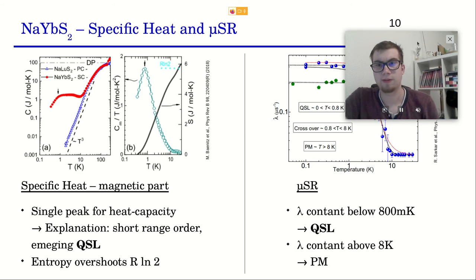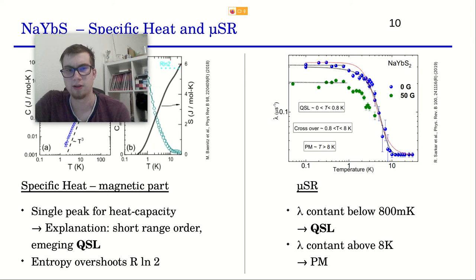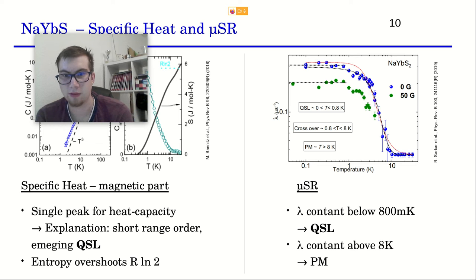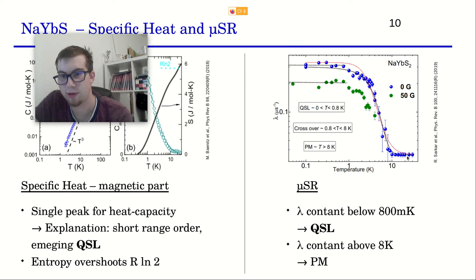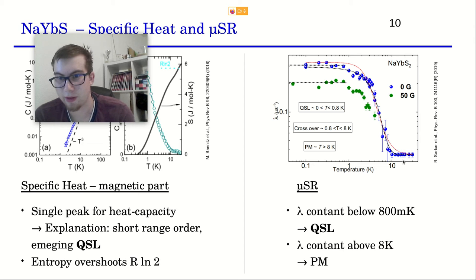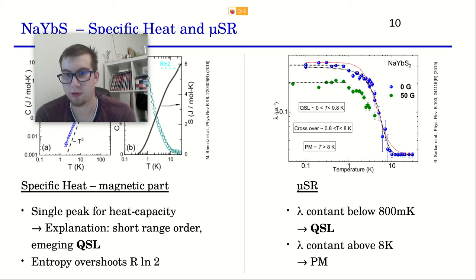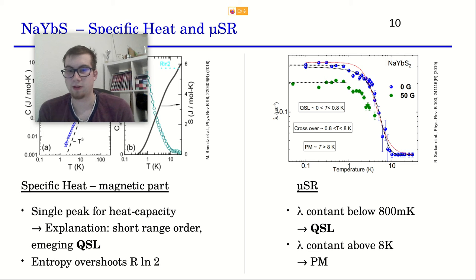I don't have deep expertise in muSR, but from this picture I understood that if we have a constant region we are not in a transition region. On the right part is paramagnetic and on the left part is quantum spin liquid. You can see something is constant here below about 1 K — suggesting a quantum spin liquid state — and something is constant above 10 K, suggesting a paramagnetic state. In between we have a broad transition region. If we had antiferromagnetic behavior we would expect a very sharp transition, but here we have a continuous crossover, which is also a hint for a quantum spin liquid ground state.